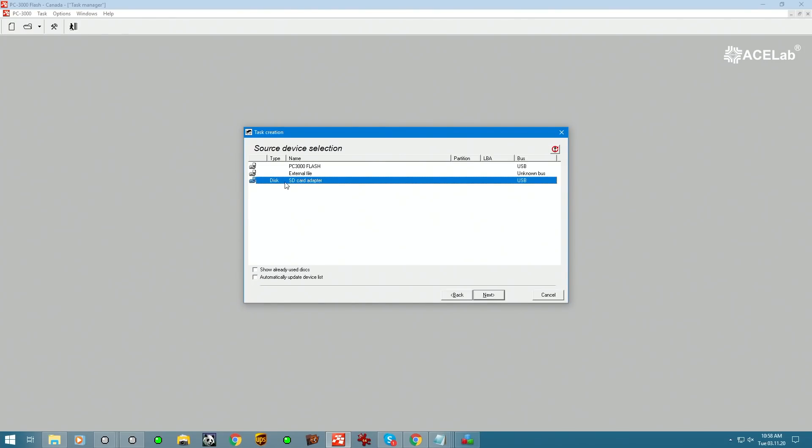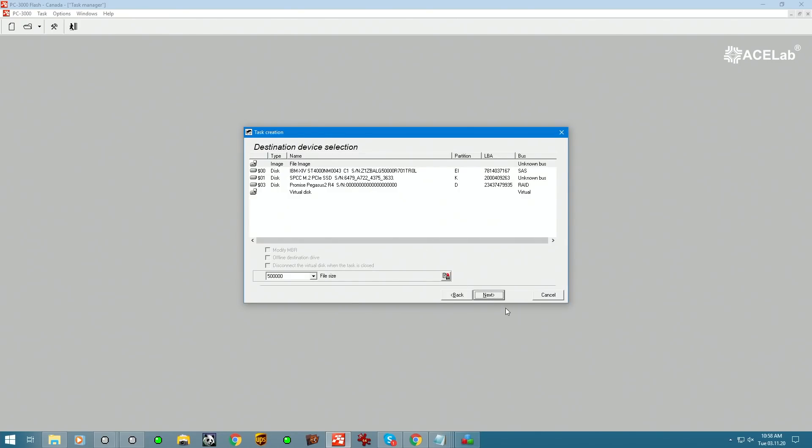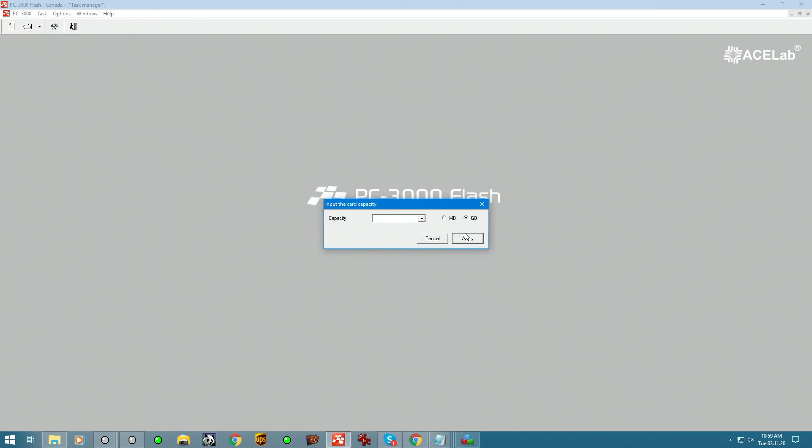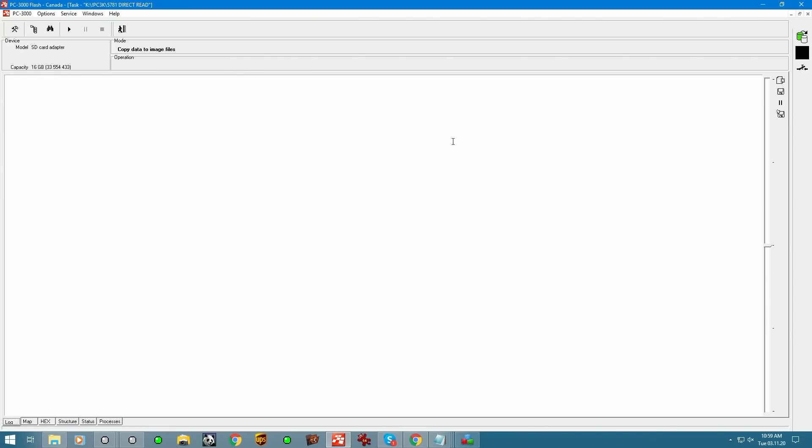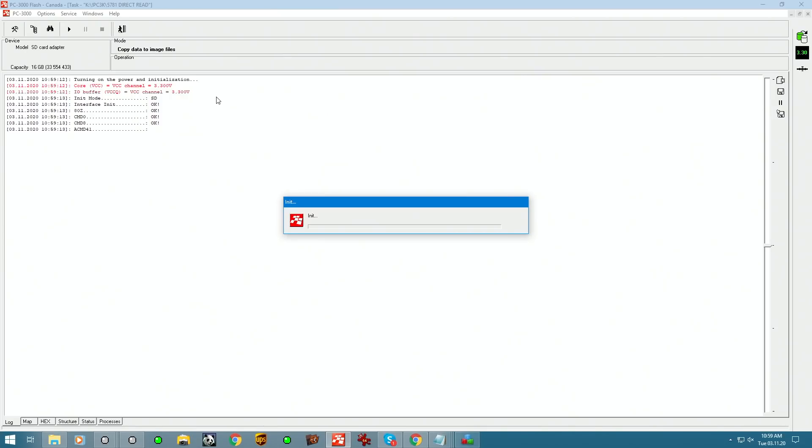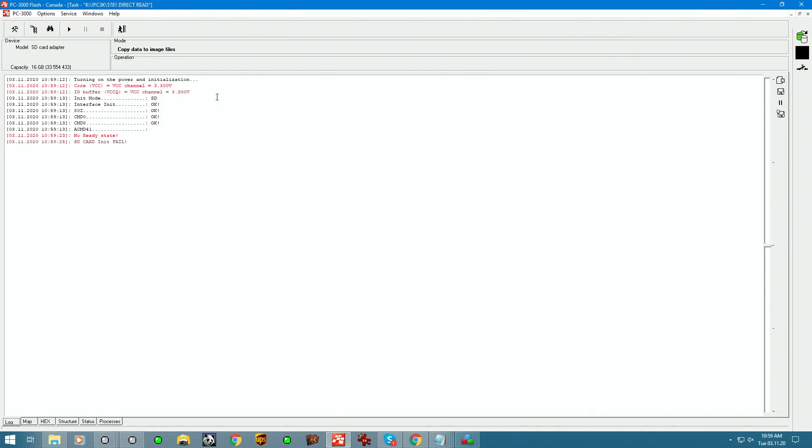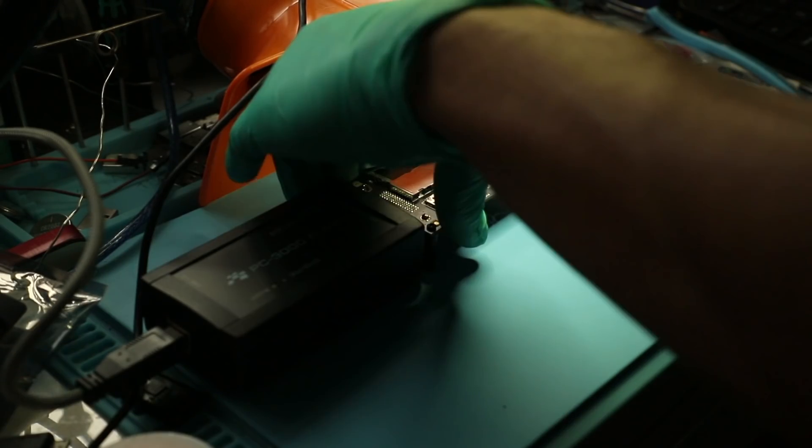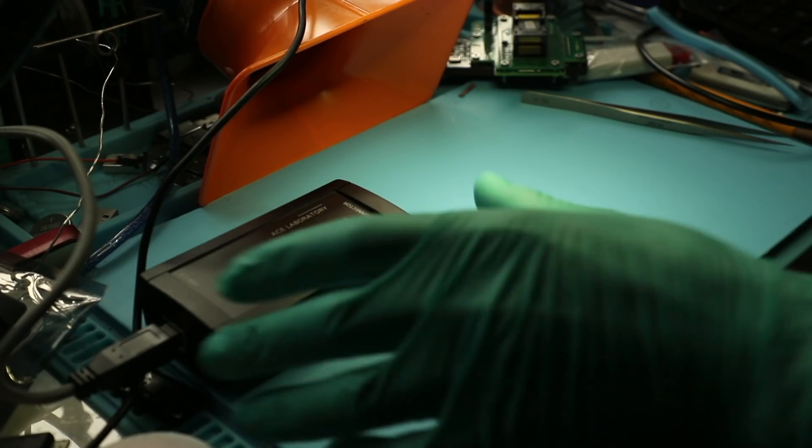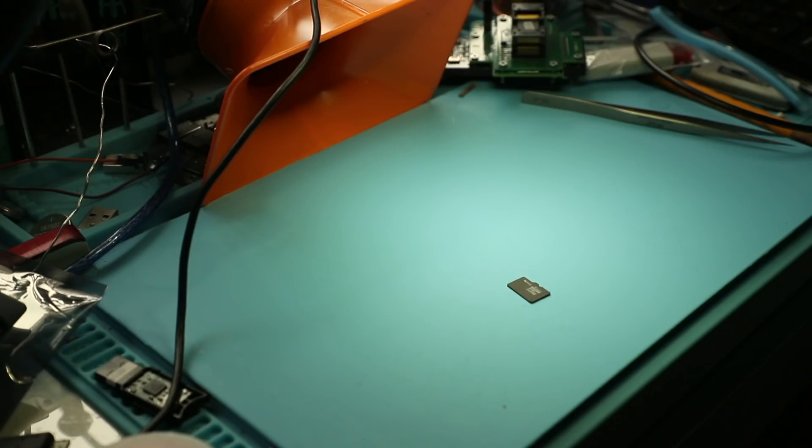This unit when it's plugged into the PC 3000 flash complex creates this option here as a separate disk. So we're going to select SD card adapter, make data copy, and save it into a file image. We can select 16 gigs for capacity. This will bring us to the screen where we can power on the device and try to initialize it. After attempting to initialize, we can get the card ready. Okay, there is no ready state, so easy options in this case are all out because it doesn't want to get detected.